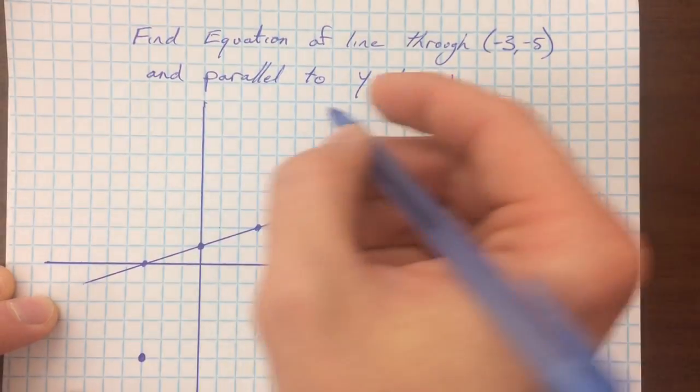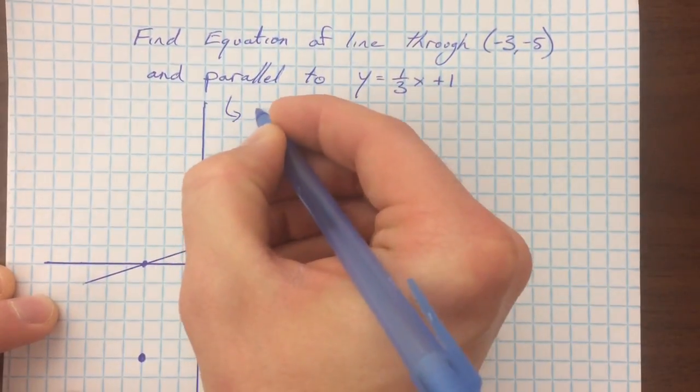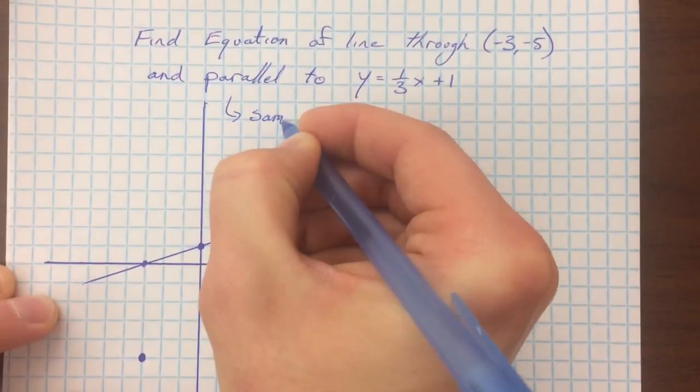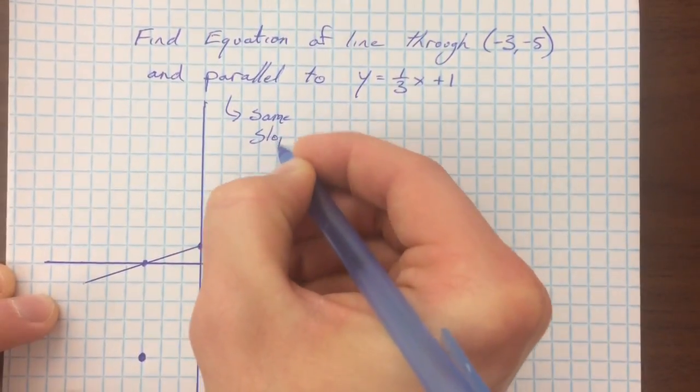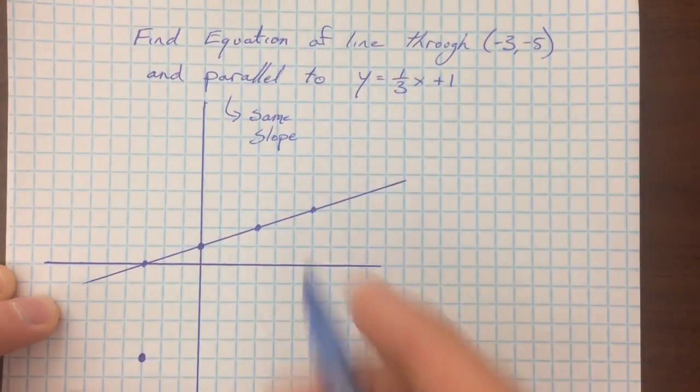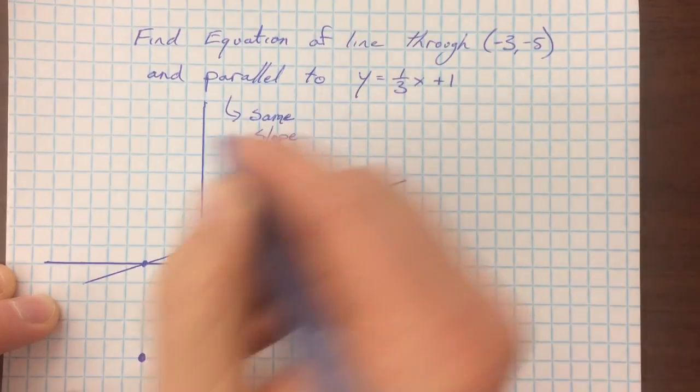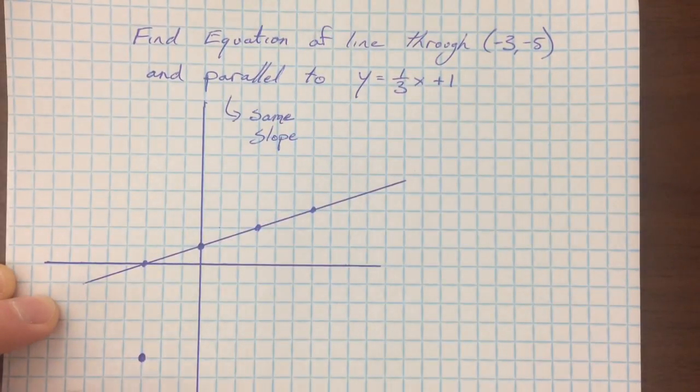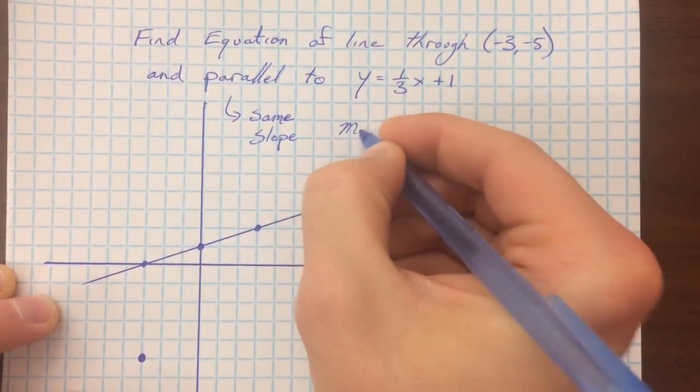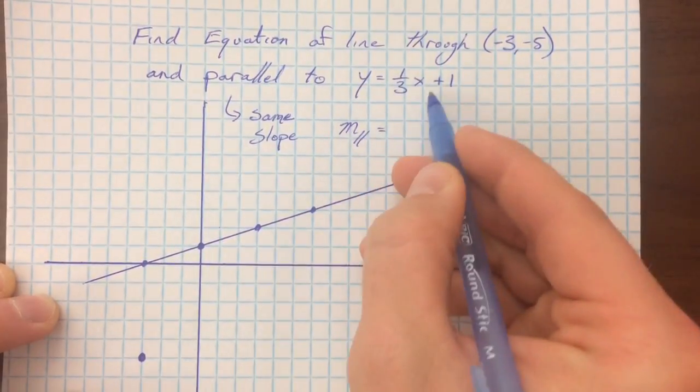And so the thing about parallel lines is that they are going to have the same slope. If they're not going to cross, they have to rise, they have to increase by the same amount each time. And so our parallel slope is also going to be the same slope as this line.